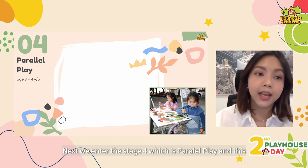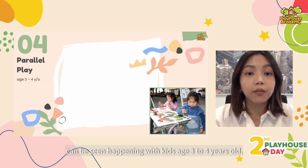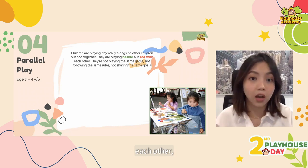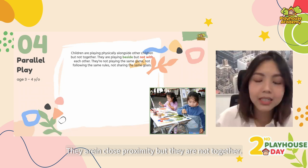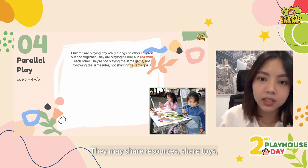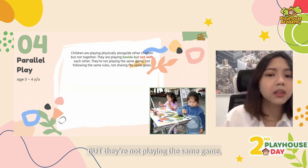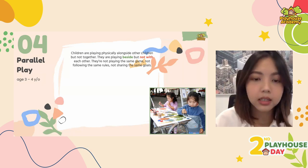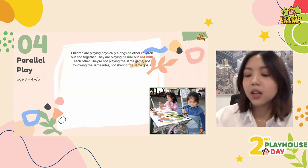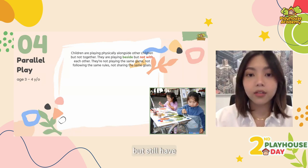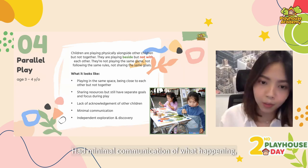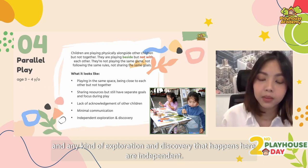We enter stage four, which is parallel play, and this can be seen happening with kids aged three to four years old. Parallel play follows the onlooker stage because now children are playing physically alongside each other, but they're not playing together. They're in close proximity but not together — playing beside each other but not with each other. They may share resources and toys and maybe observe one another from a distance, but they're not playing the same game. They don't have the same rules or goals yet. Children are starting to play in the same space and share resources, but they still have separate goals and focuses. There's still a lack of acknowledgement of other children, hence the minimal communication, and any exploration and discovery that happens here is independent.